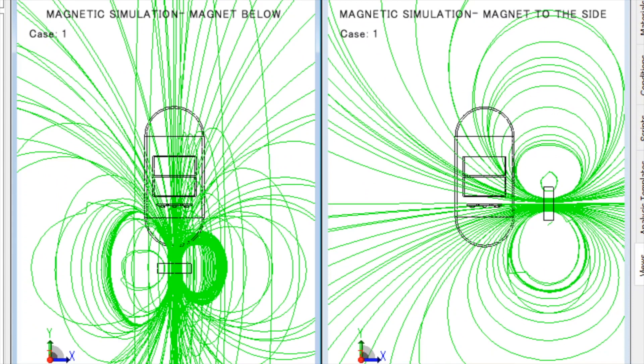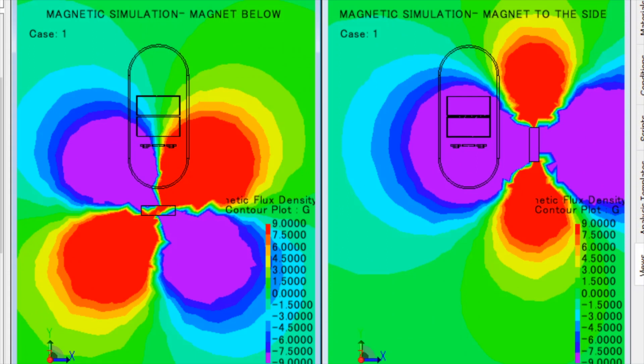This way, we can quickly identify the optimum spot to place our magnetic sensors and determine the optimal size and grade of magnet that will actuate the sensor.